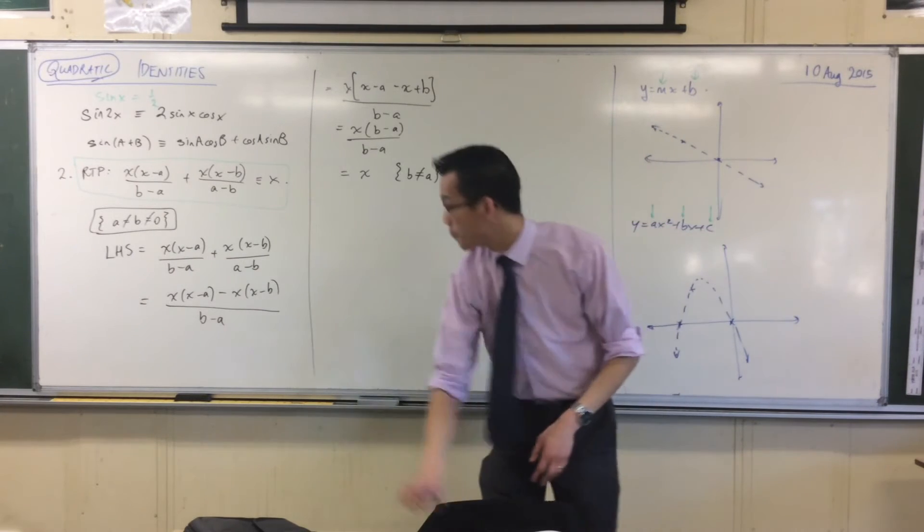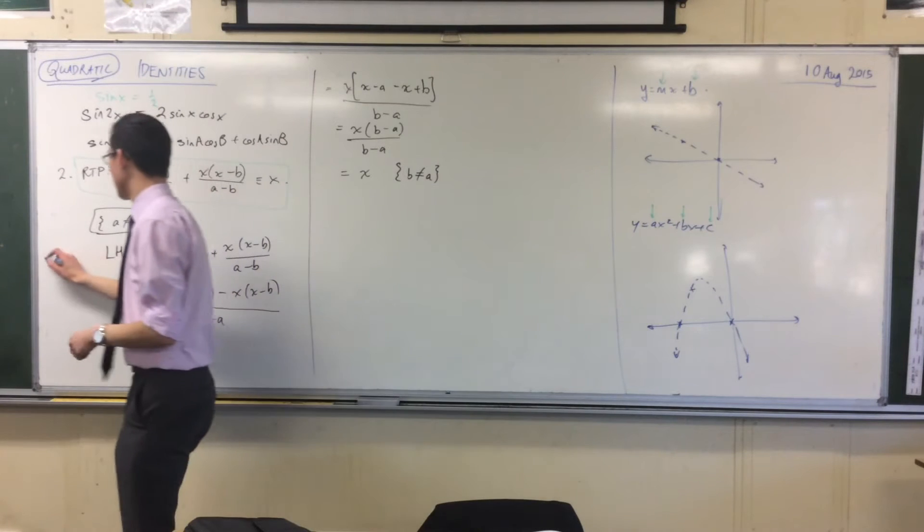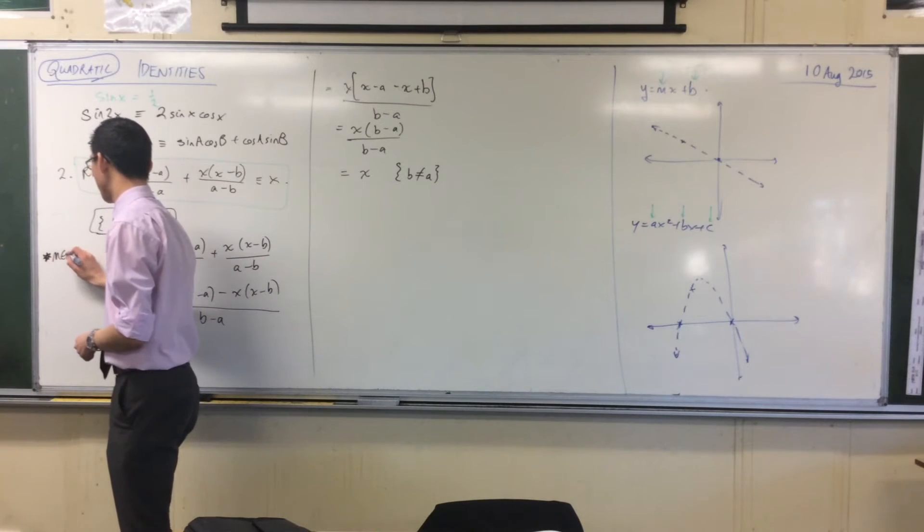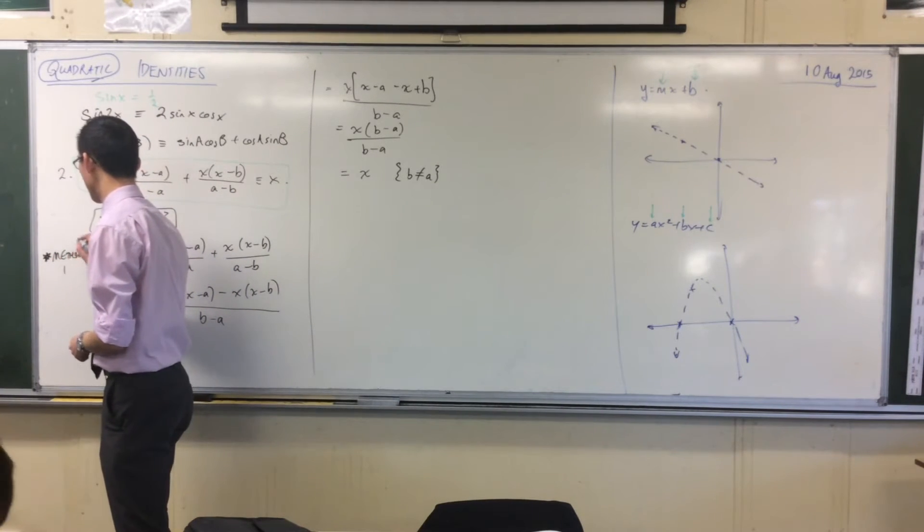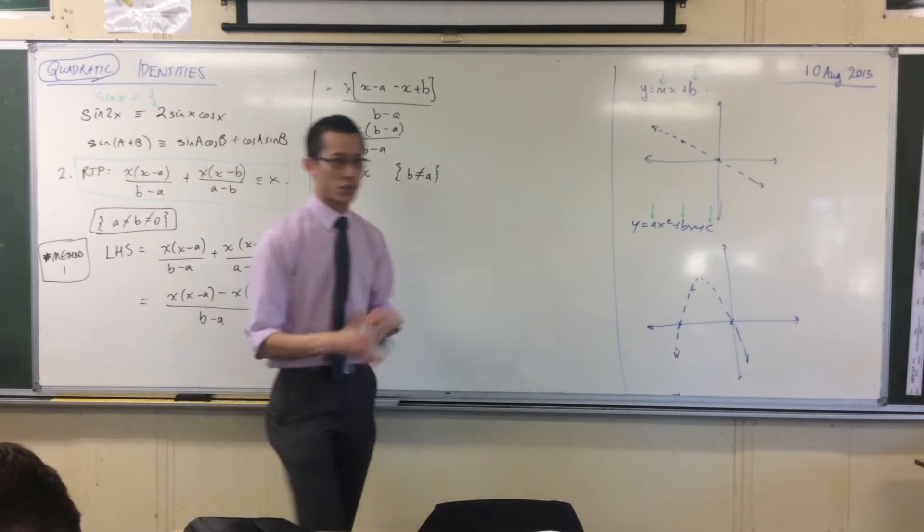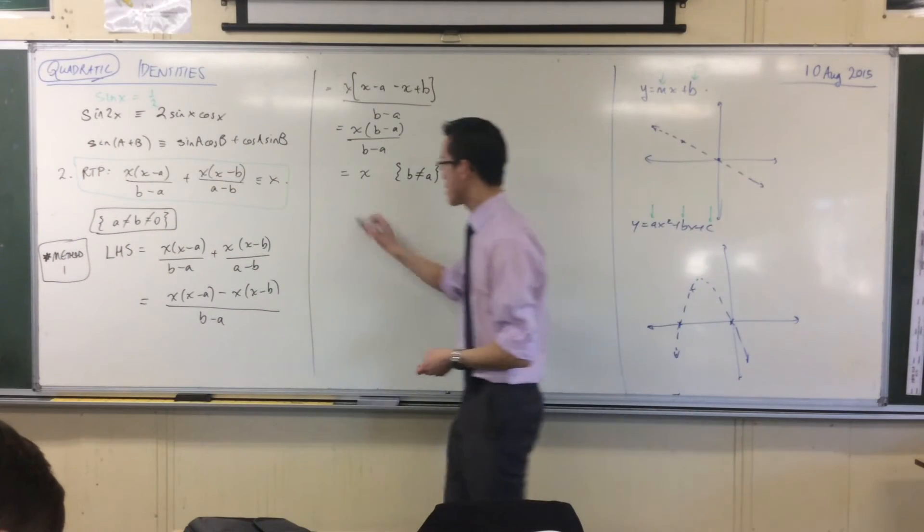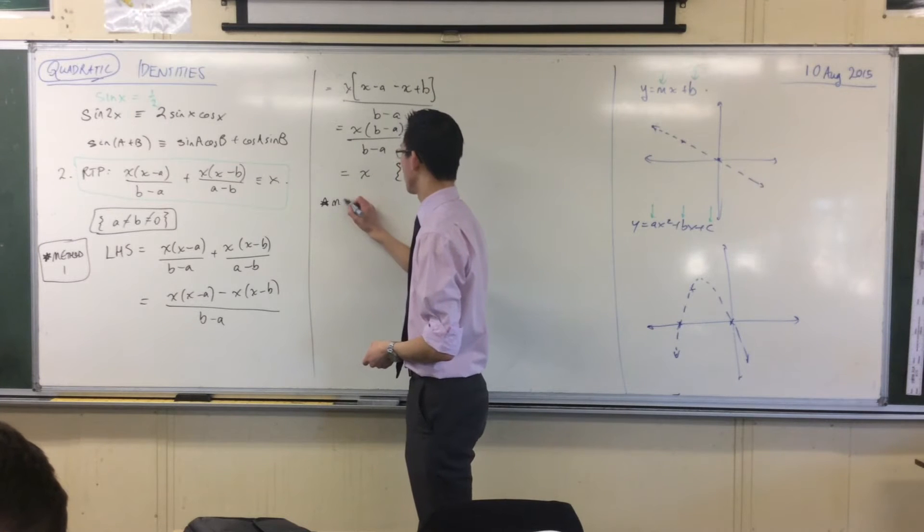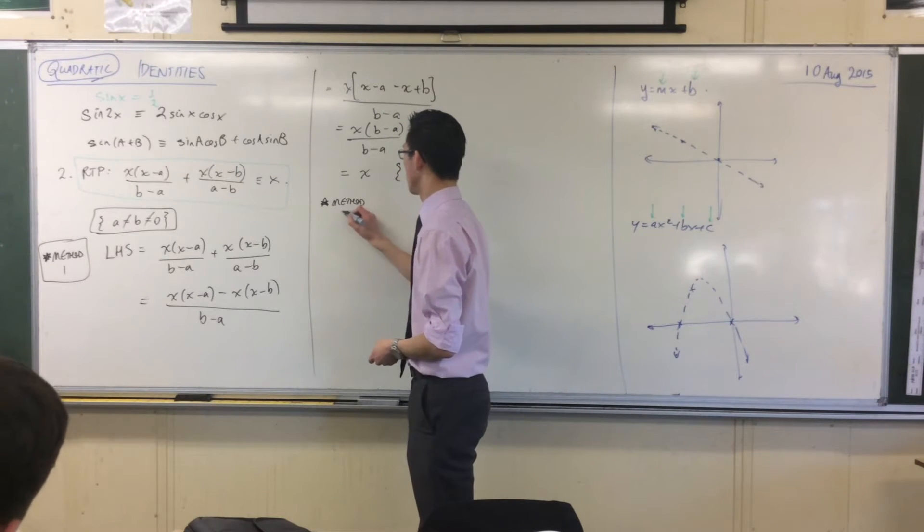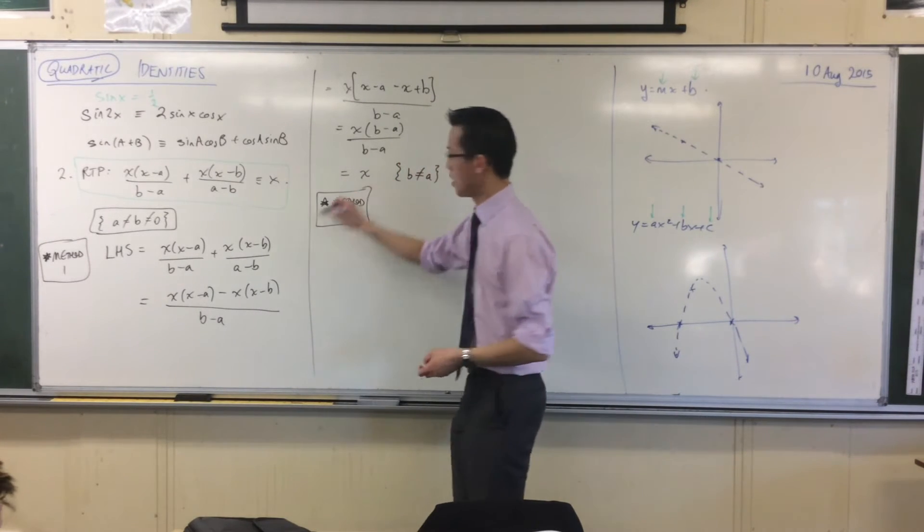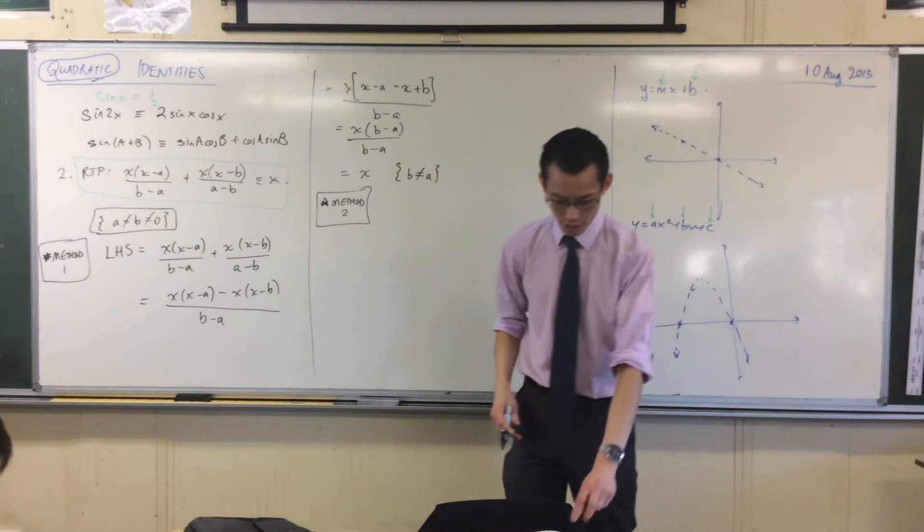So, this is kind of method one that we just did here, maybe label that method one, which is just a straightforward algebraic simplification. Here's method two, which is about substitution.